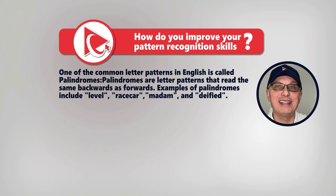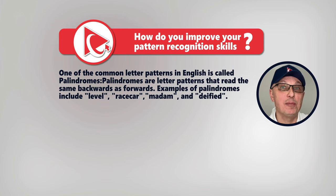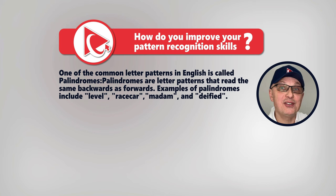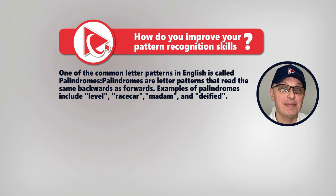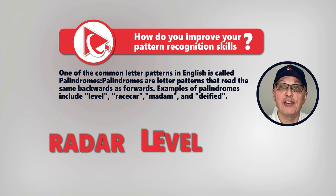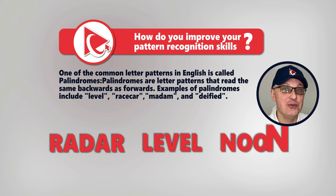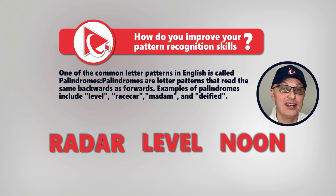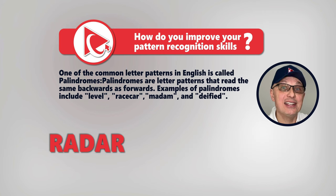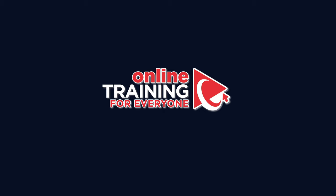One of the most frequent questions is how to improve pattern recognition skills. Let me introduce you to one of the most common English patterns: palindromes — words that read the same forwards and backwards. Examples frequently used in tests include: radar, civic, level, race car, henna, madam, noon, pup, eve, kayak, rotator, stats, tenant, wow, and many others. Do you know any other palindromes? Please post them in the comments so we can all learn.